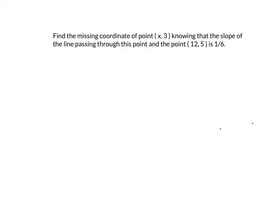Okay, so we have a problem and it says find the missing coordinate of point (x, 3) knowing that the slope of a line passing through this point and the point (12, 5) is 1/6. What I'm going to utilize for this video is cross-multiplying, and where cross-multiplying comes from is when you have two fractions that are equivalent to each other. To demonstrate this very quickly, let's say that I had 3 over x equals 9 over 12, just to show you where this comes from.